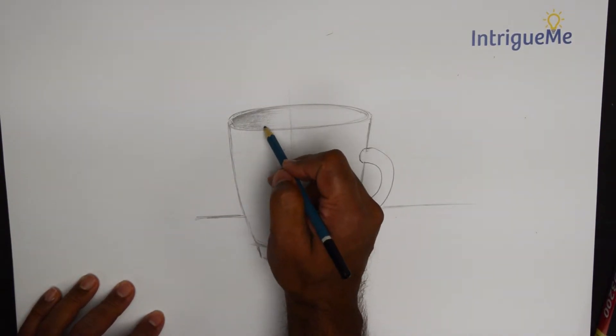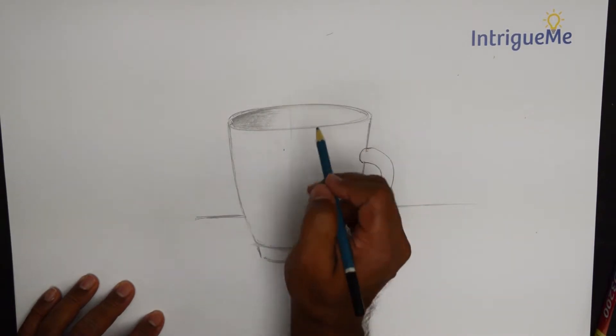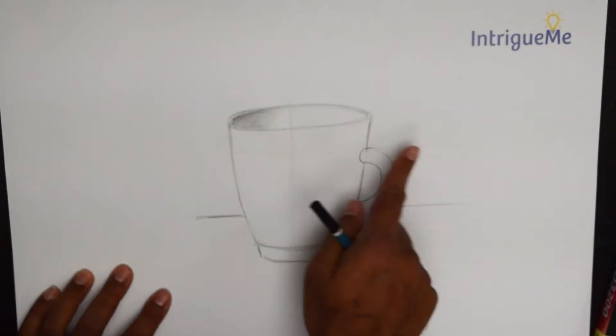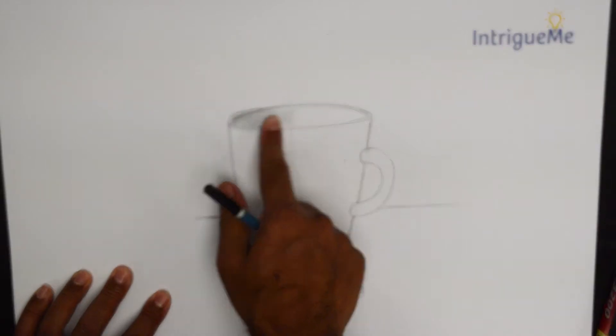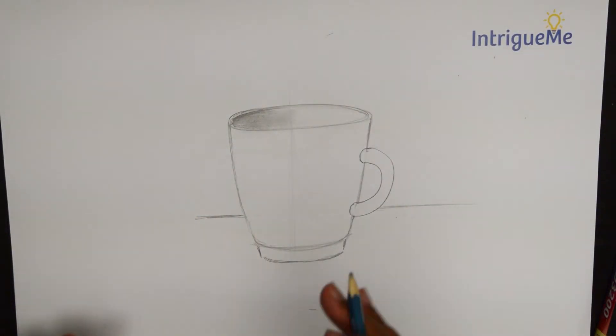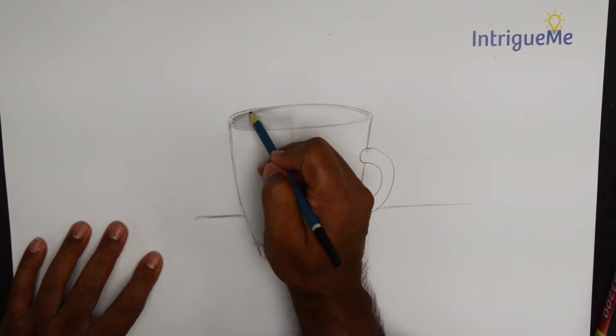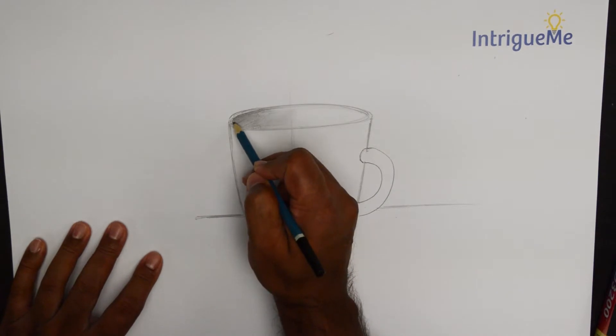Now if you smudge this you'll see that you have the desirable effect more or less. And this edge should actually be a little bit darker because the light is swallowed up here on that end.